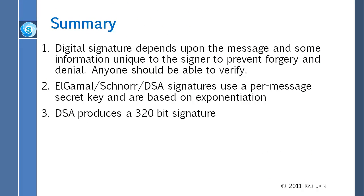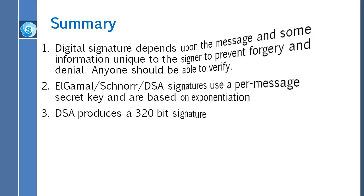So the summary, there are three key points of this short lecture. Digital signature depends upon the message and some additional information. You need the signer to prevent forgery and denial, and anybody should be able to verify. And in addition, what we have done in these cases, which we did not do before in MAC, was we have a per message secret. So for each message we use a secret, and therefore we have to send two numbers, one which basically allows the other side to know the secret. Actually they don't need to complete the secret, they can just use those two numbers to verify. And it uses, it generates the 320-bit signature.